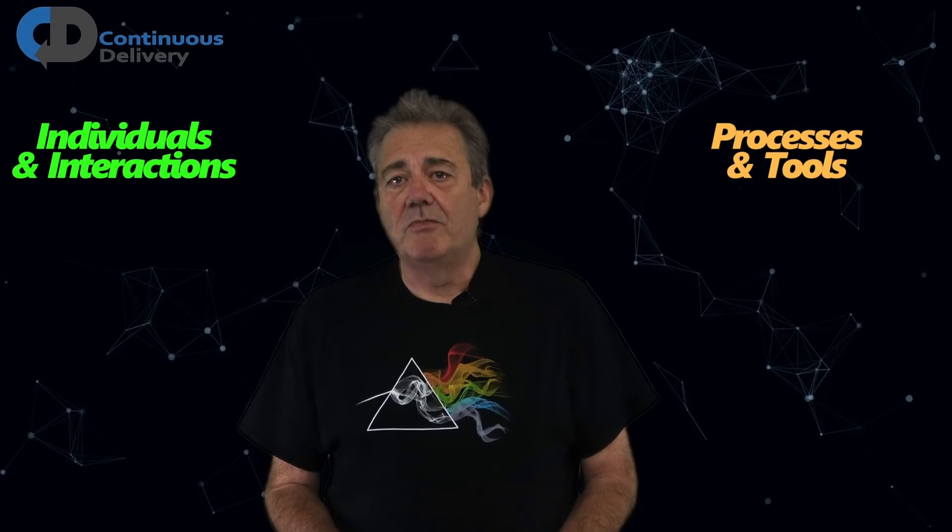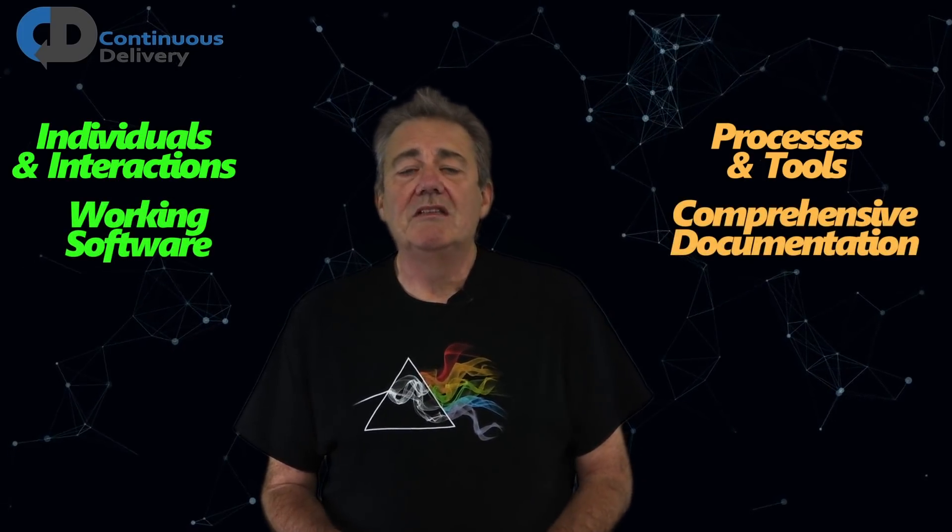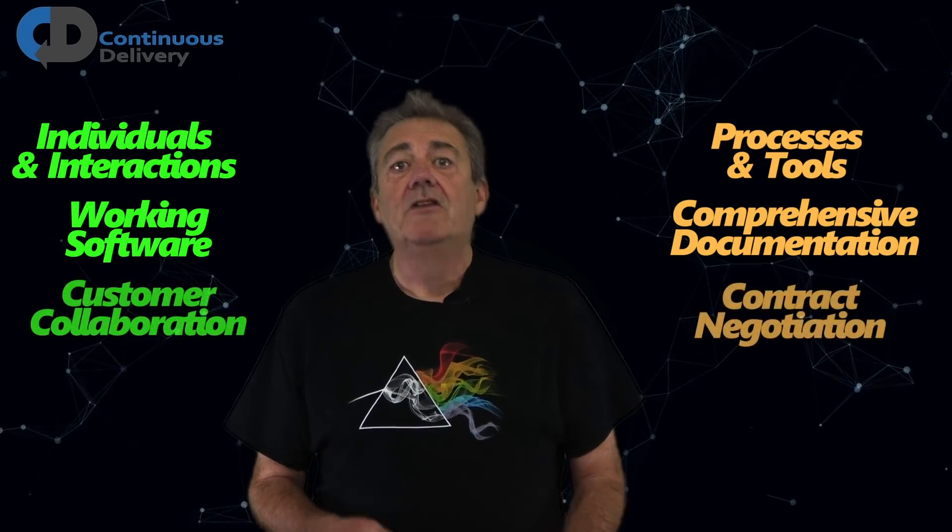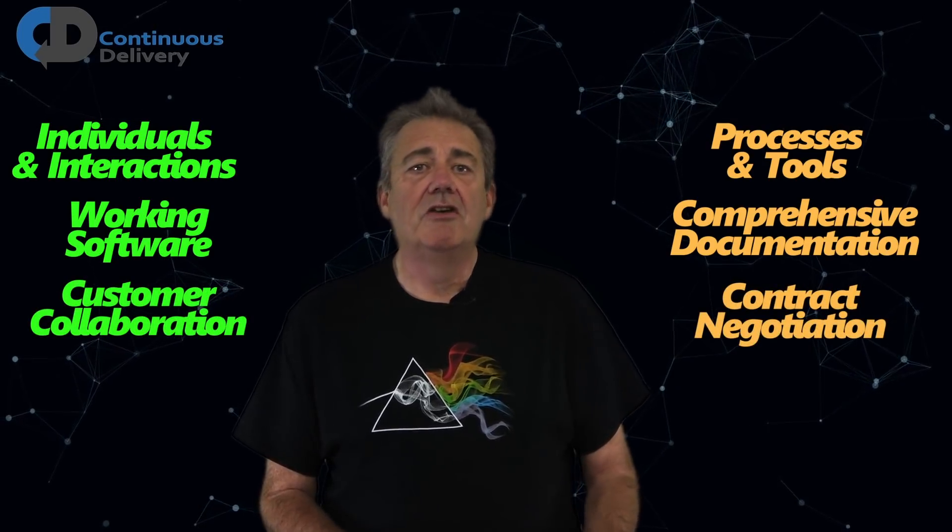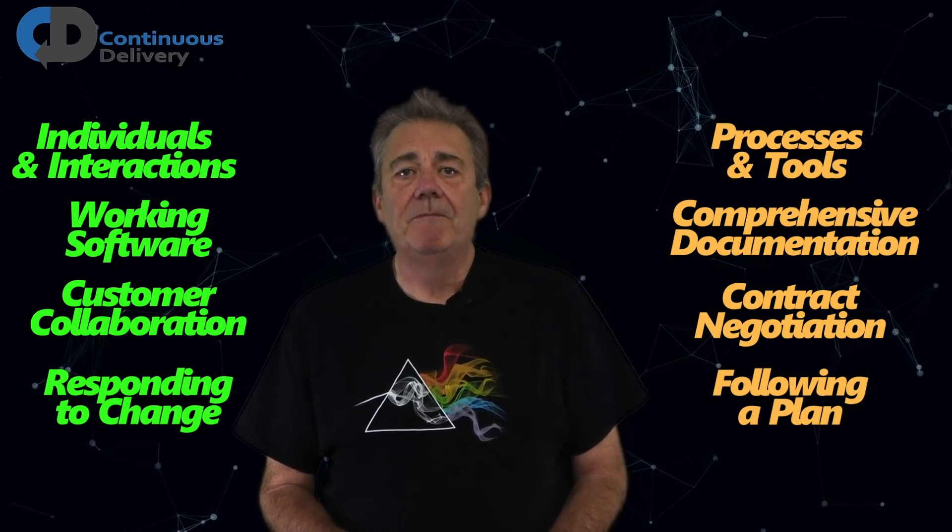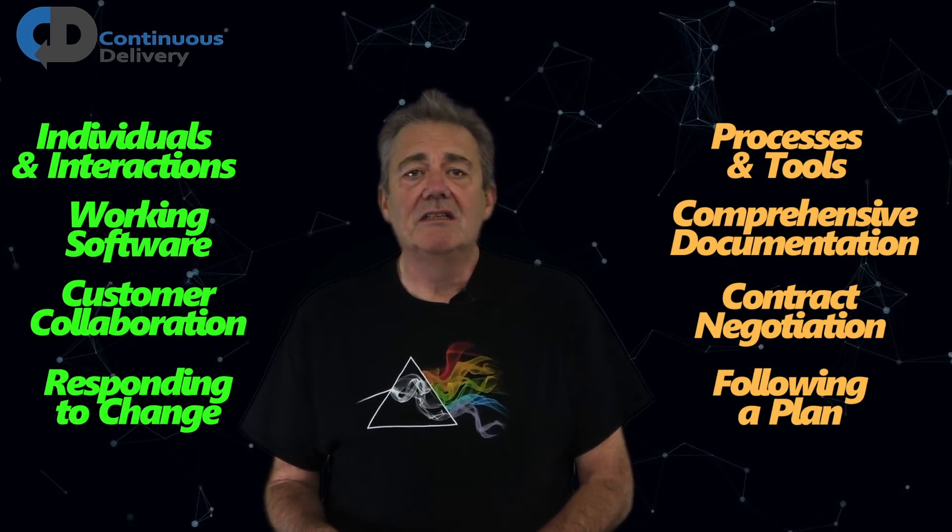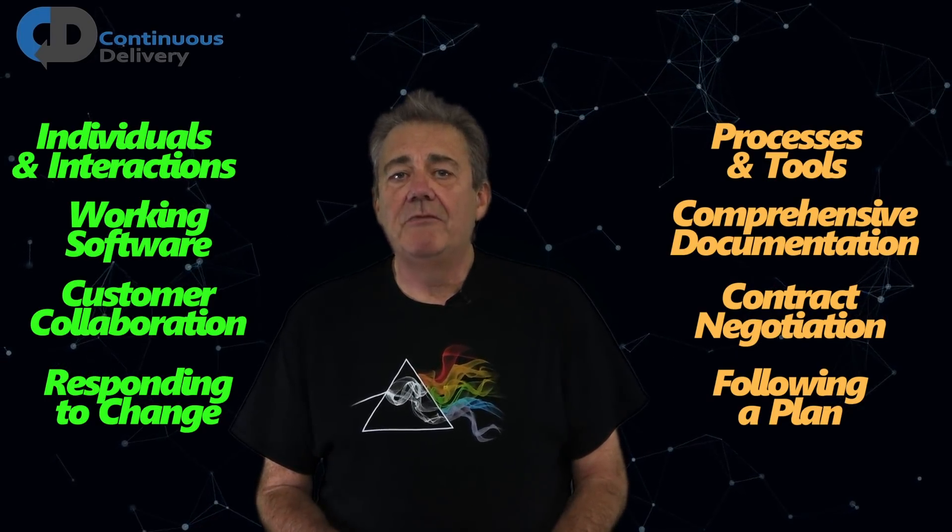On the first, it describes four values. It says, individuals and interactions over processes and tools. Working software over comprehensive documentation. Customer collaboration over contract negotiation. And responding to change over following a plan. That is, while there's value in the items on the right, we value the items on the left more.